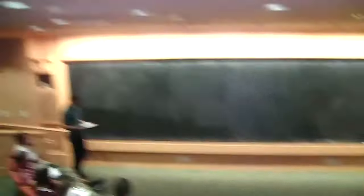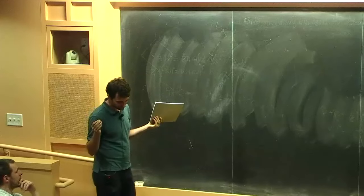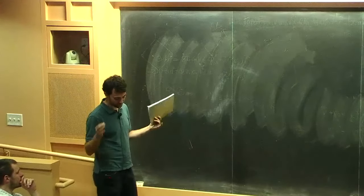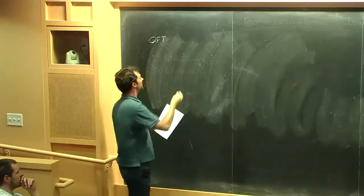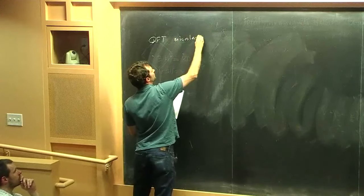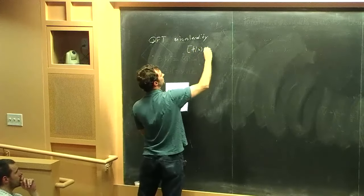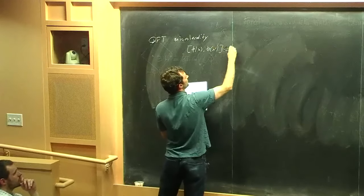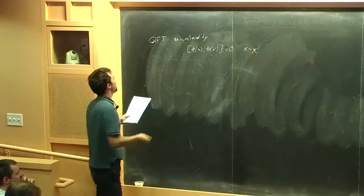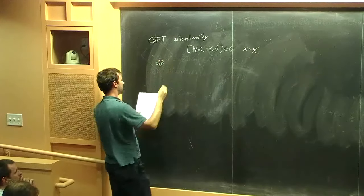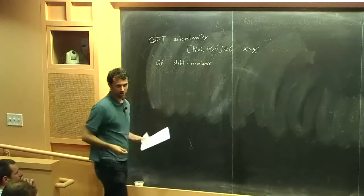Will Donnelly introduces a topic that is not cosmological — it's about how diffeomorphism invariance changes our concept of locality. In QFT, we usually have the axiom of microlocality: two scalar operators at space-like separation should commute. In GR, diffeomorphism invariance means you can't define truly local objects — a diffeomorphism-invariant operator must be something like an integral over spacetime of a local density.